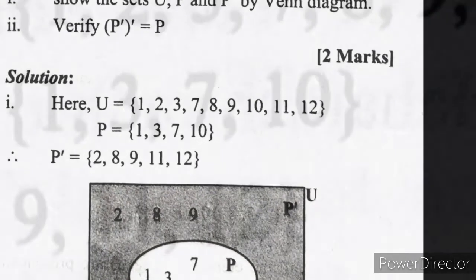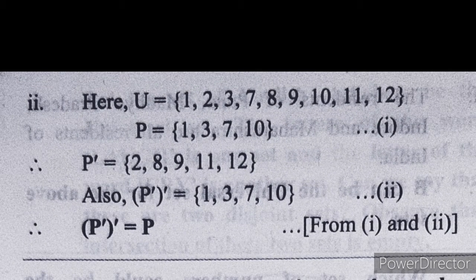Next, verify that the complement of P complement equals P. U has elements 1, 2, 3, 7, 8, 9, 10, 11, 12. P has elements 1, 3, 7, 10. P complement is 2, 8, 9, 11, 12. The complement of P complement means elements absent in P complement, which gives us 1, 3, 7, 10 — which is exactly set P. So we prove that (P')' = P.